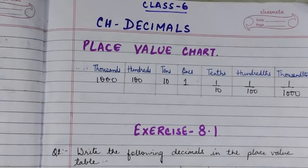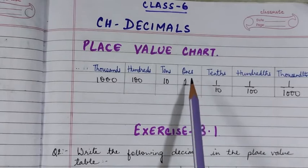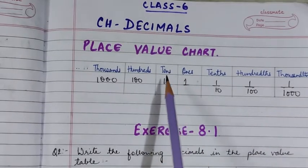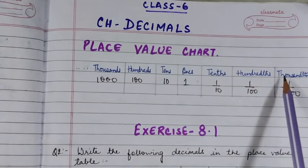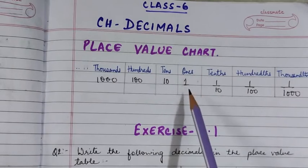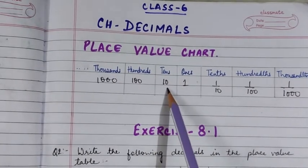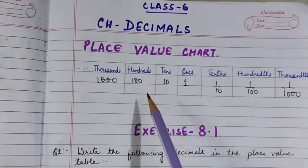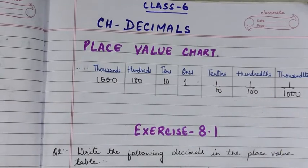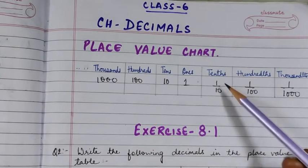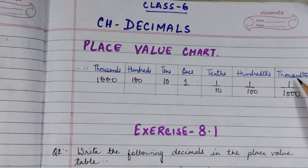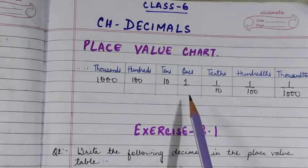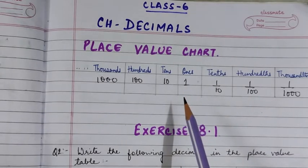Here I have drawn a place value chart. On the left of ones we have tens, hundreds, thousands, and on the right of ones we have tenths, hundredths, and thousandths. Ones is represented by 1, tens by 10, hundreds by 100, and so on. Similarly, tenths is represented by 1/10, hundredths by 1/100, and thousandths by 1/1000.